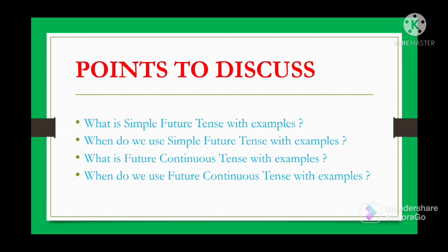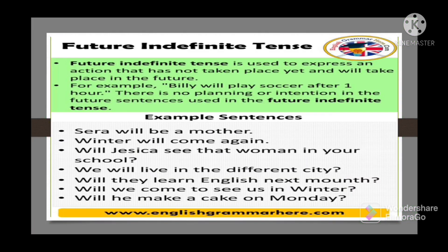First let us see what is simple future tense. Simple future tense, it is also called future indefinite tense, is used to express an action that has not taken place yet and will take place in the future. That means it is used to express an action which will take place in the future.